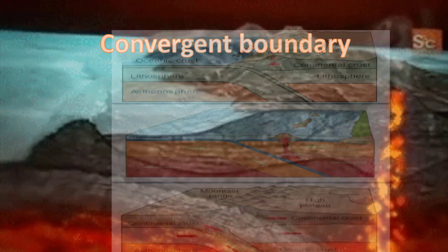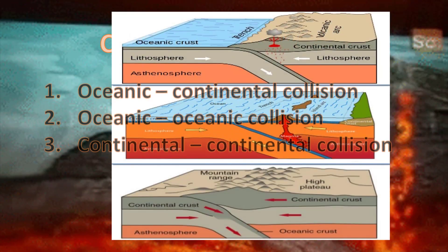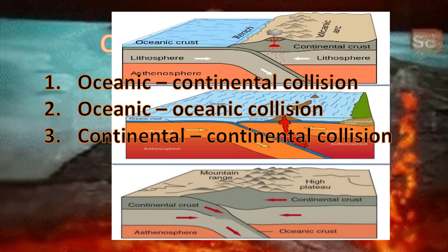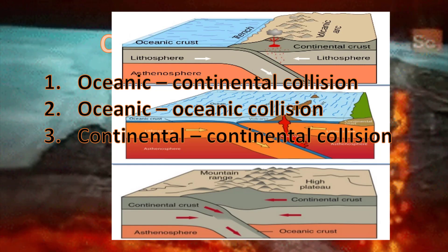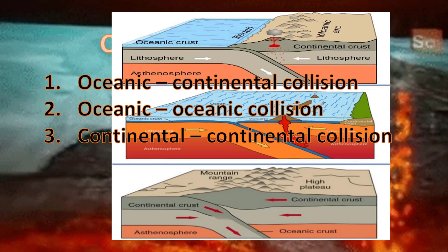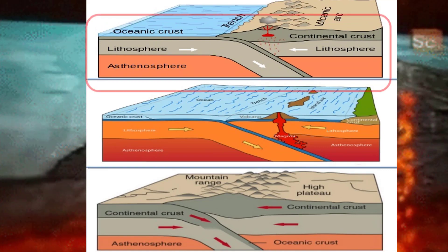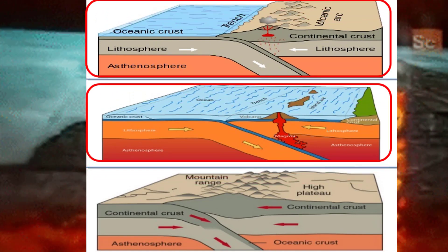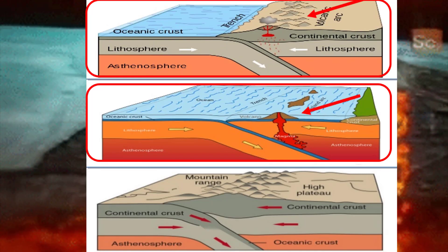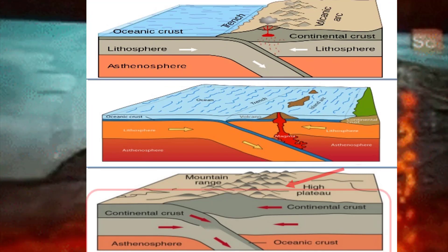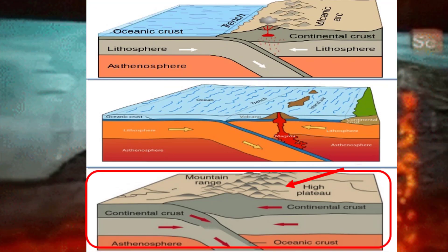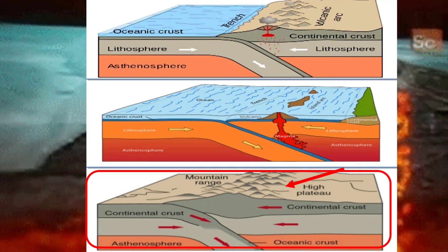In convergent plate boundaries there can be three kinds of collisions: oceanic-continental plates collision, oceanic-oceanic plates collision, and continental-continental plates collision. In the case of oceanic-continental and oceanic-oceanic plates collision, island arcs are formed. In the case of continental-continental plates collision, mountain ranges are formed — the Himalayas were formed in such a collision.